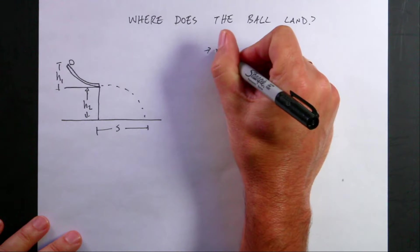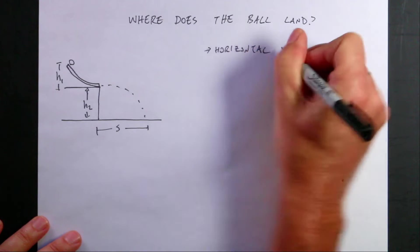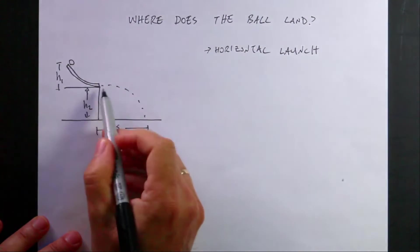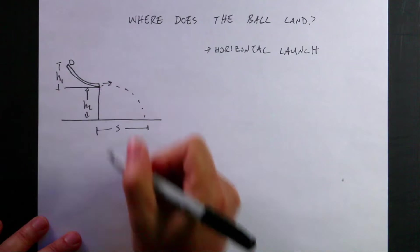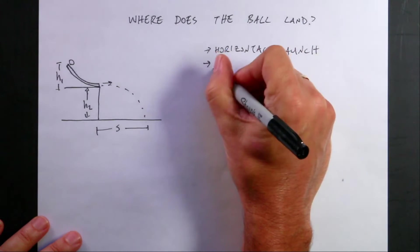One is a horizontal launch. I'm assuming a horizontal launch. And so what does that mean? I should write it down. That means that at this point it's shot directly this way. Okay, so that is important.